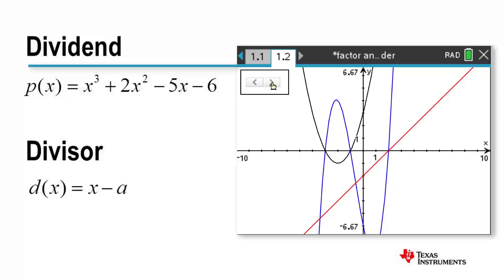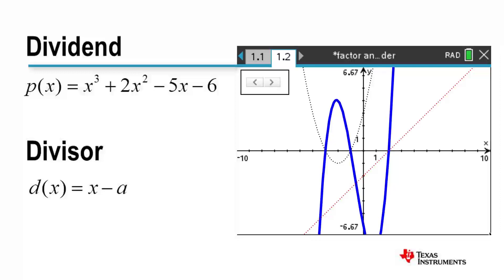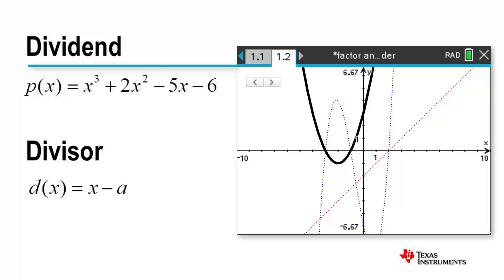Now we see something very interesting. I have divided my original polynomial by x minus 2, and the result appears to be a quadratic, that is, another polynomial.